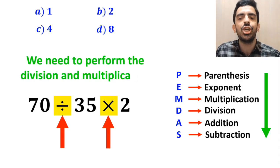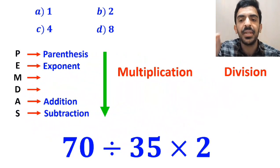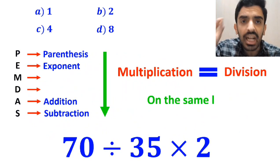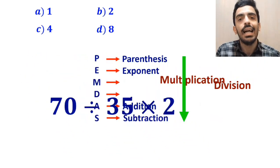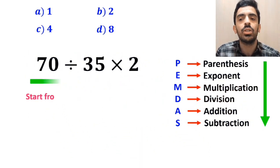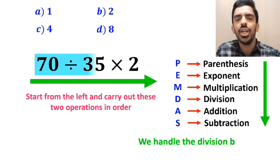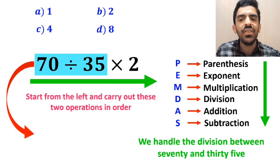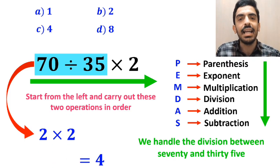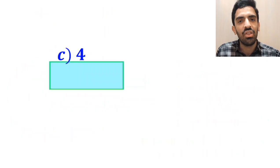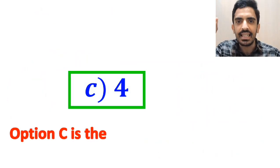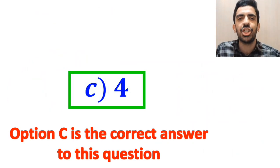Now we need to perform the division and multiplication. It's very important to keep in mind that multiplication and division are on the same level of precedence. In this case, the best approach is to start from the left and carry out these two operations in order. First we handle the division between 70 and 35, which simplifies this expression to 2 times 2, and finally the answer becomes 4. Therefore, option C is the correct answer to this question.